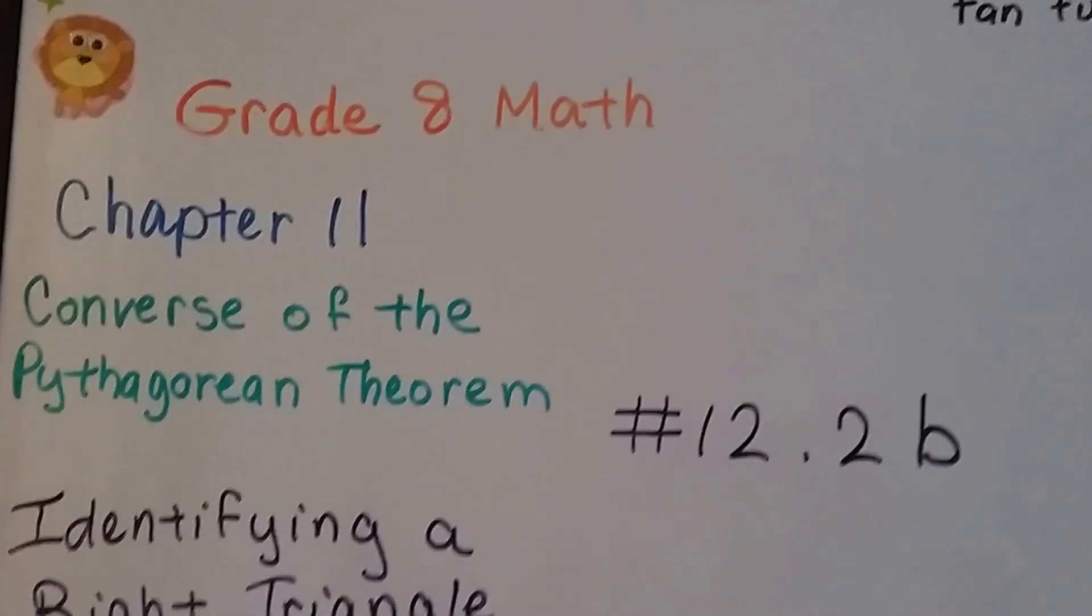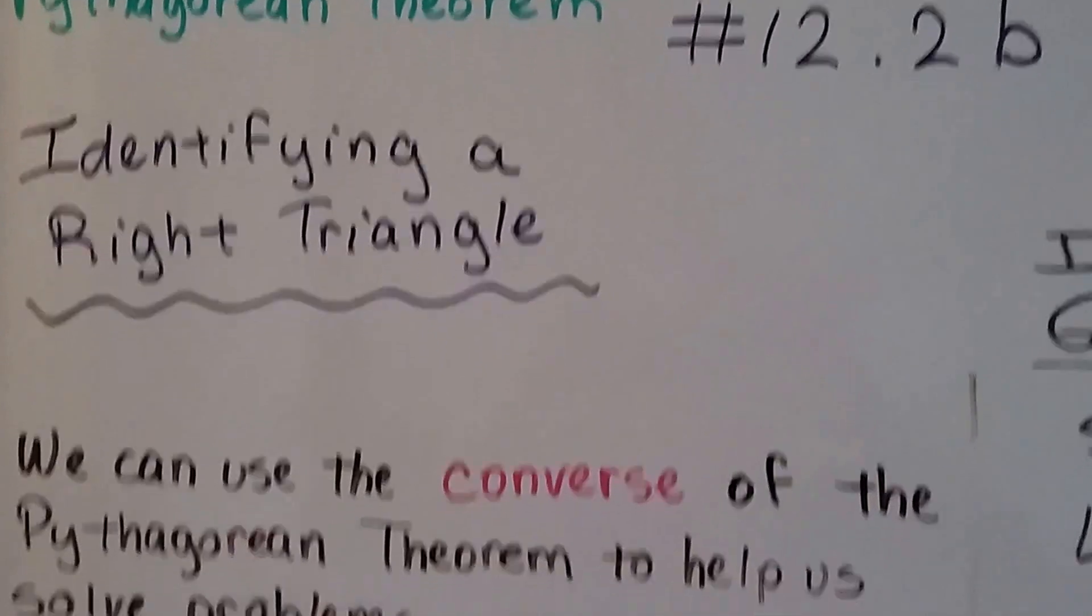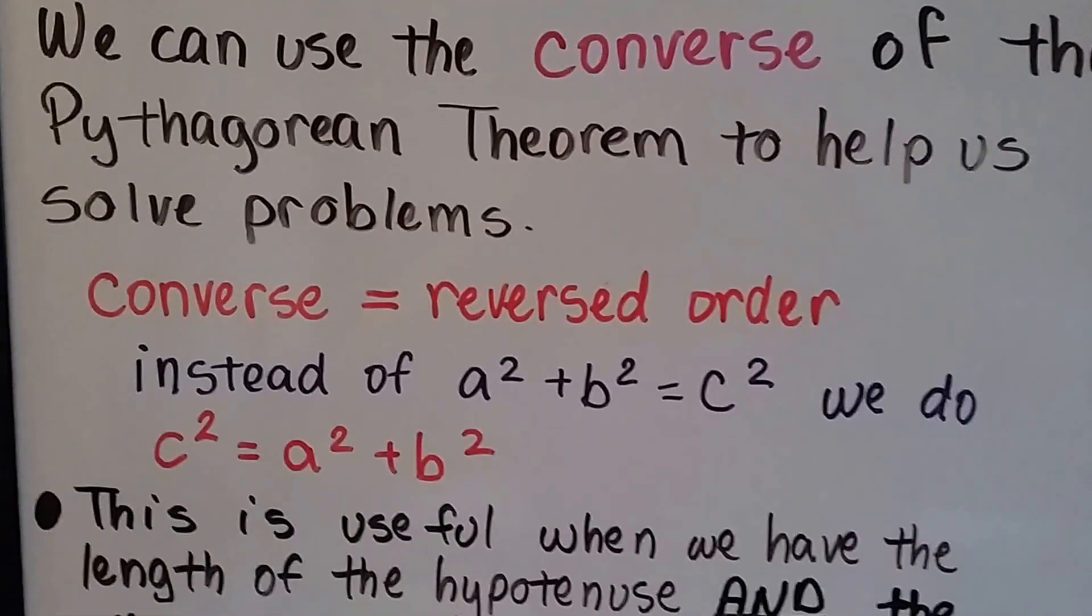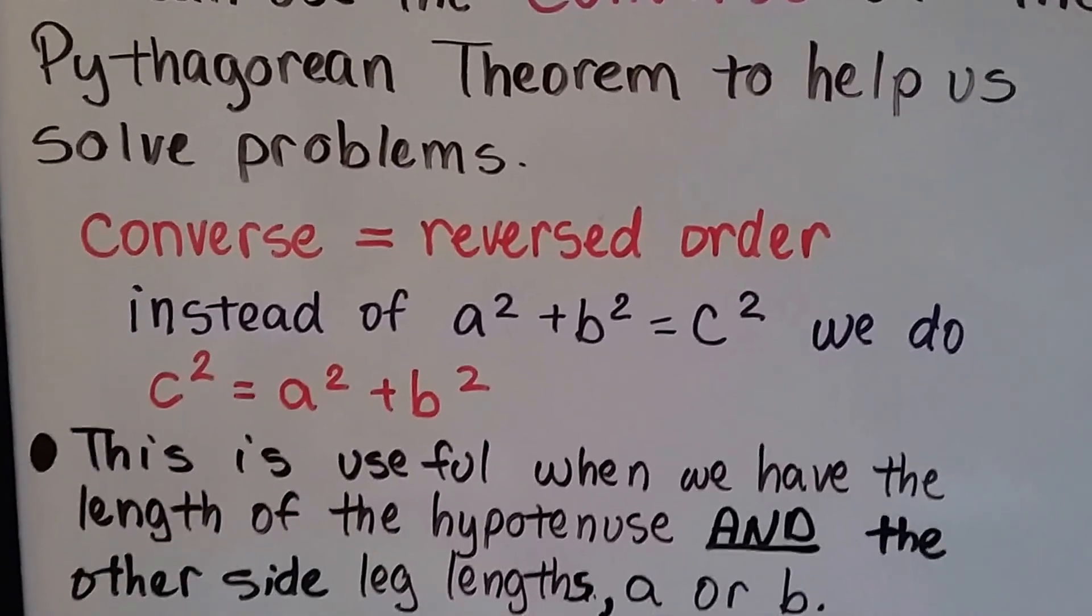Grade 8 math number 12.2b, identifying a right triangle. We saw in the last video that we can use the converse of the Pythagorean theorem to help us solve problems.